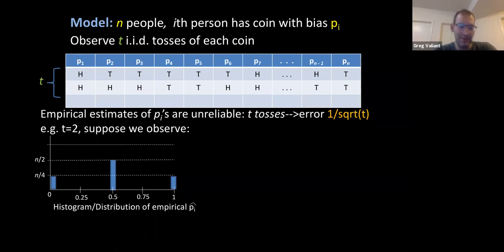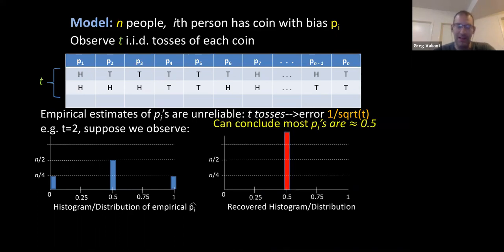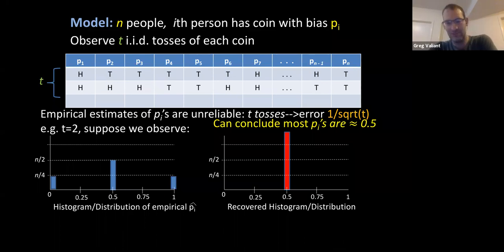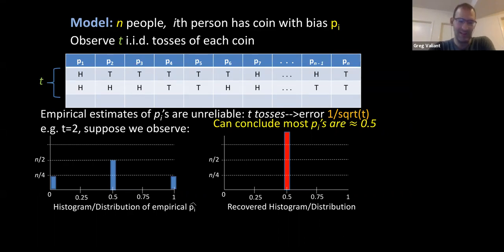Because n is large, the average should concentrate, so we can certainly say with good probability the average p_i is close to one-half. But I claim we can actually say a lot more than that. In this case, I claim we can conclude that almost all of the p_i's must be almost exactly one-half — not only is the average p_i close to a half, but if n is large, probably 99 percent of the p_i's should be between 0.49 and 0.54.